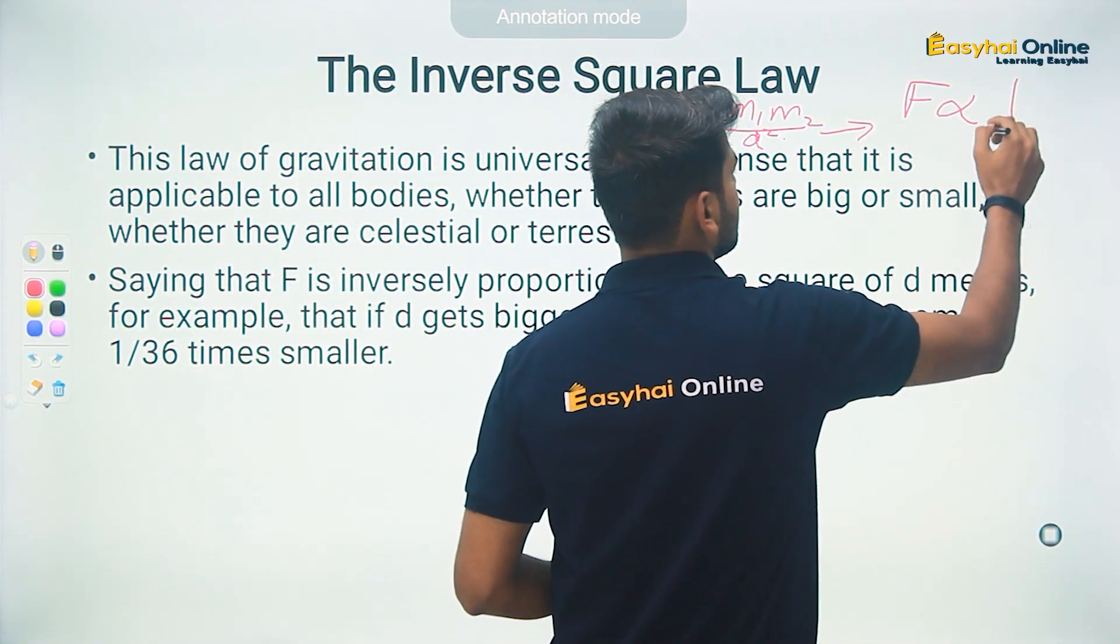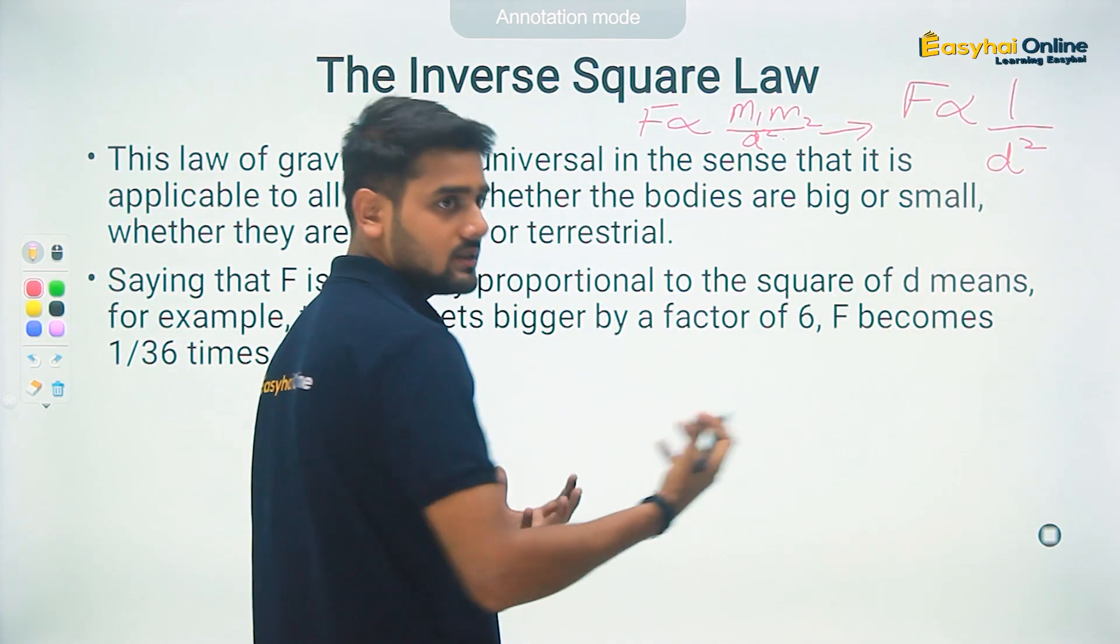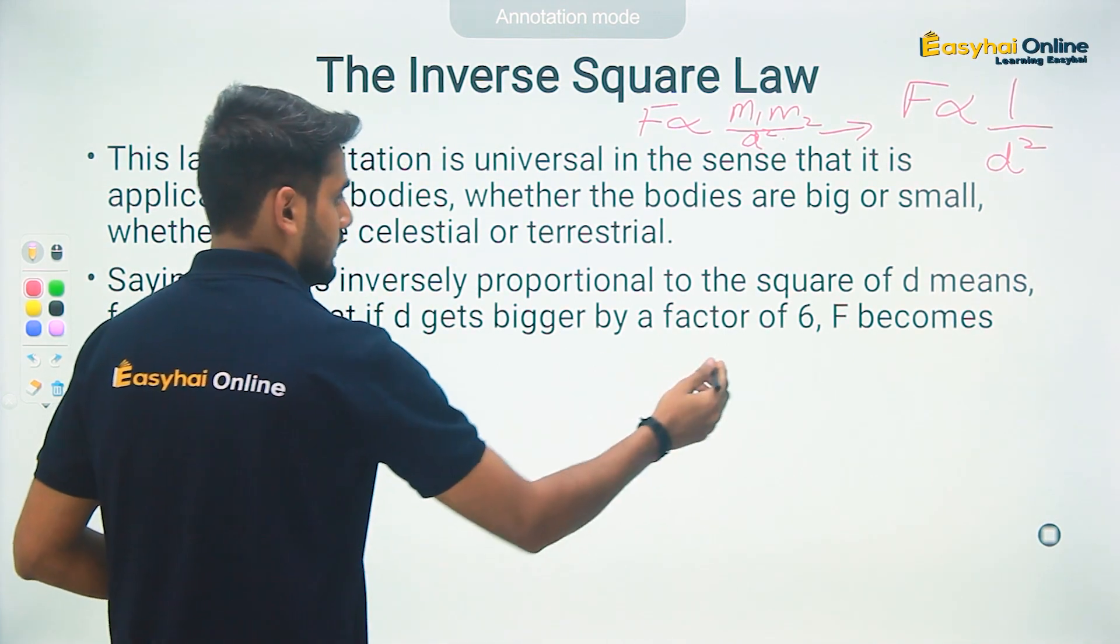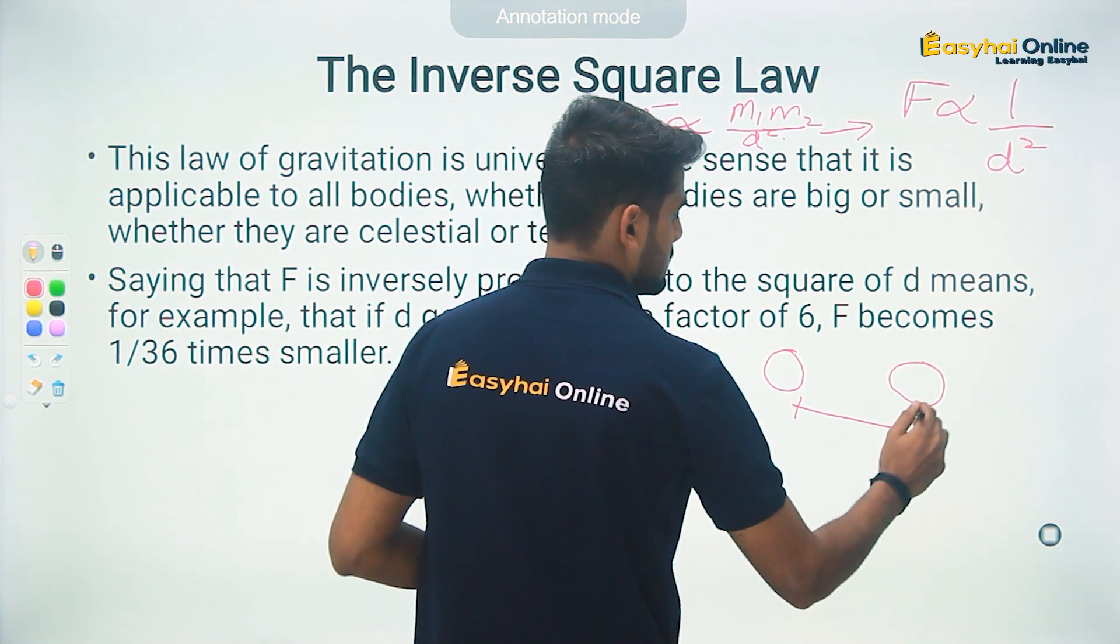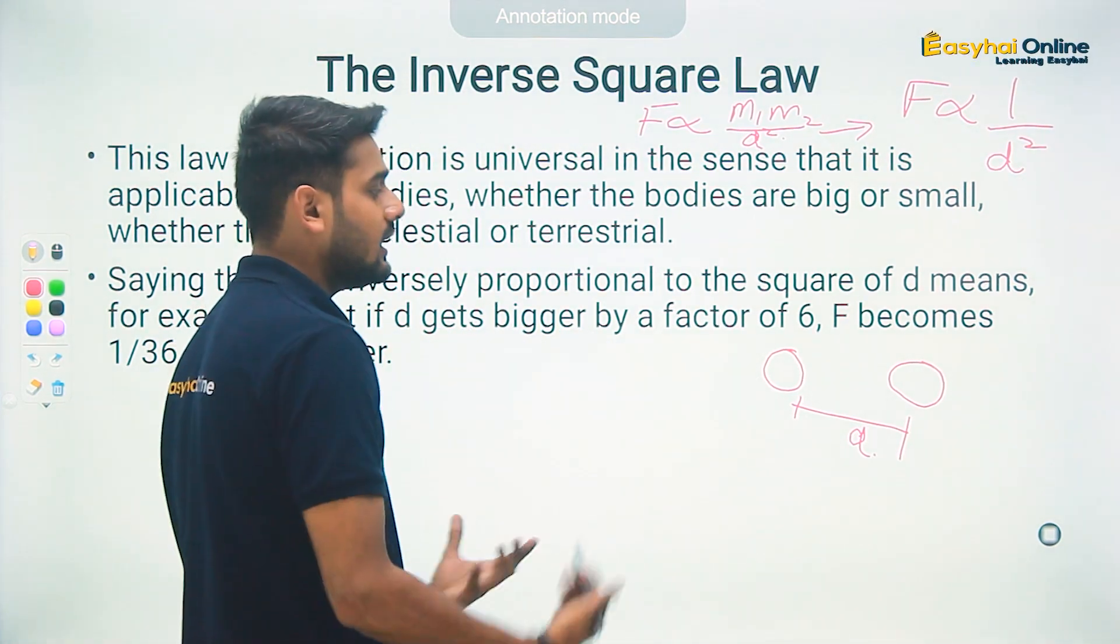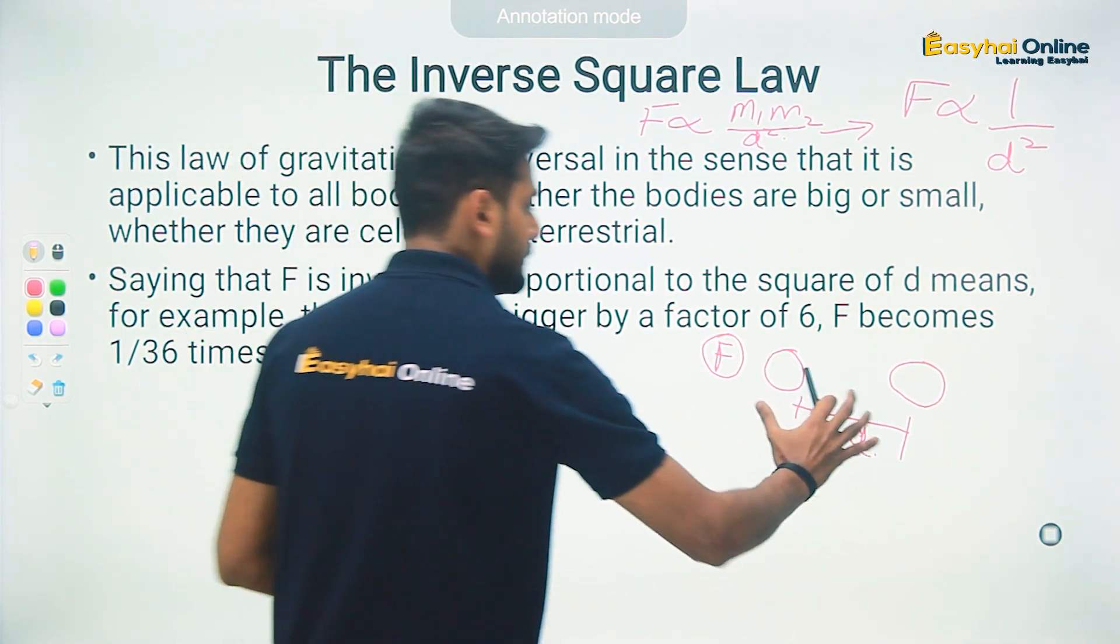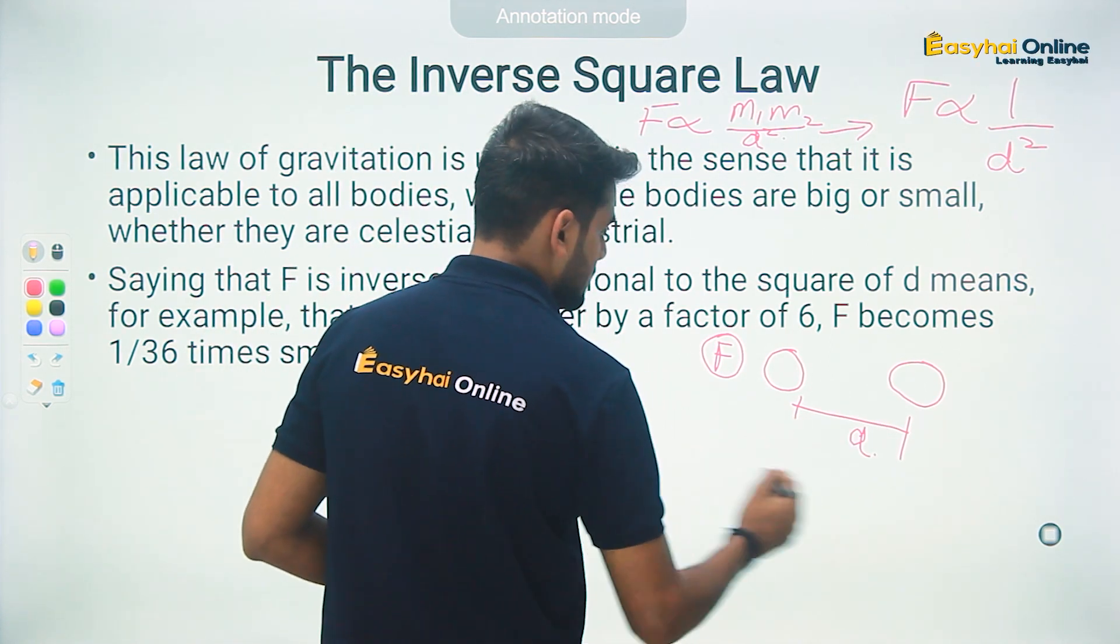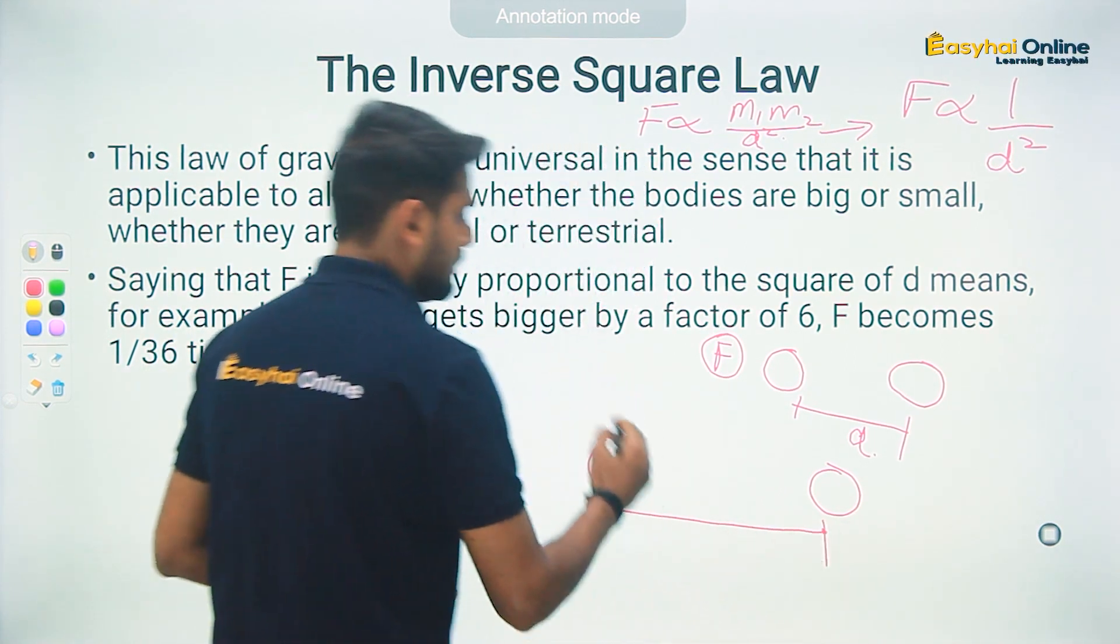What this essentially means is let us consider two objects which are placed like this with the separation of D. These two objects will have some gravitational force between them, yes or no? Now let's say I am going to increase the distance - this is the distance and now I am increasing the distance two times the original, so basically now the distance has increased by a factor of two.